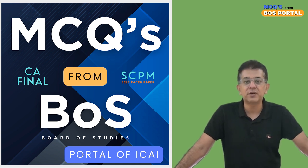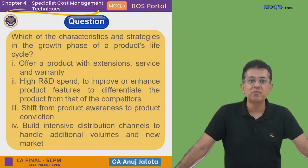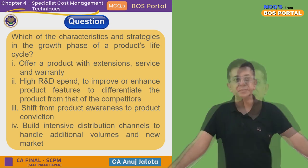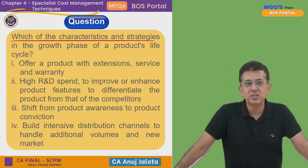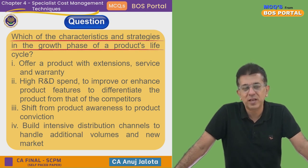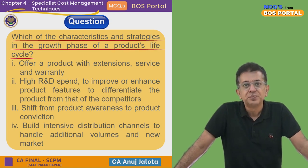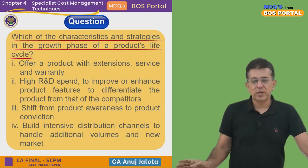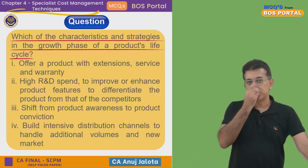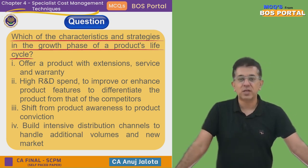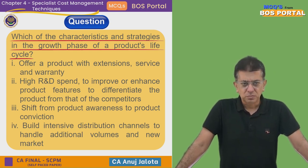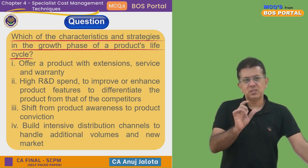Let's start today's question. This is Chapter 4, all about the Product Life Cycle. The question is: which are the characteristics and strategies in the growth phase of the Product Life Cycle? Do remember, there are four stages: introduction stage, growth stage, maturity stage, and declining stage. Growth stage is the second stage.